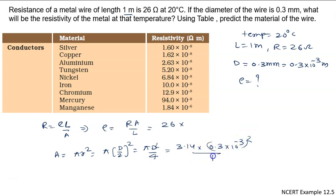We put here this value: it is 3.14 × 0.3 × 10^-3 whole square, divided by 4. And what is the length? Length is given to us as 1 meter, so you can write it is 1.